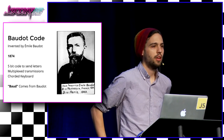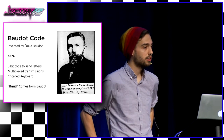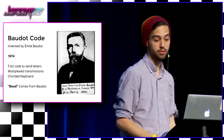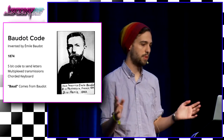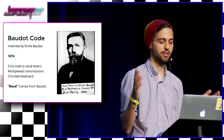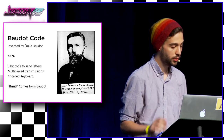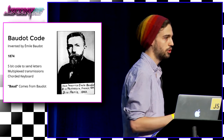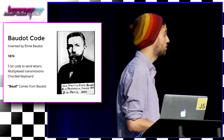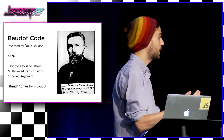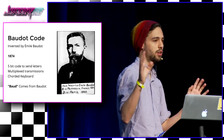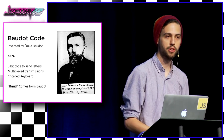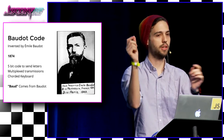Then Emil Baudot came along and said, these Morse code operators are really expensive to hire — they're like modern-day software developers. He came up with a new code: not Morse code, but Baudot code. He came up with a corded keyboard so people could be trained much faster and didn't have to be highly skilled to send information. It became cheaper. An interesting note: the term Baud actually comes from this guy's name. A Baud is a single bit of information — how many bits we can send per second.